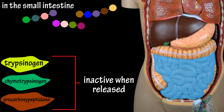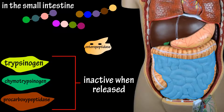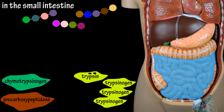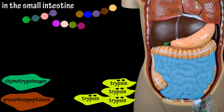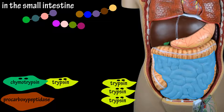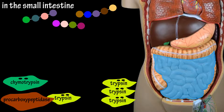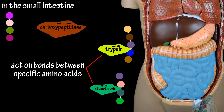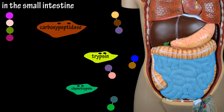All three of these are inactive when released. An enzyme called enteropeptidase is released by the small intestine, and this enzyme activates trypsinogen to trypsin, which in turn activates other trypsinogen into trypsin, chymotrypsinogen to chymotrypsin, and procarboxypeptidase to carboxypeptidase. Trypsin and chymotrypsin act on bonds between specific amino acids within the partially digested protein, breaking them into smaller peptide fragments.